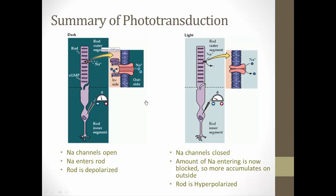In the dark, cyclic GMP keeps sodium channels open, so sodium flows in and the rod is depolarized. In the light, cyclic GMP is broken down, sodium channels close, sodium accumulates outside making the inside very negative, and the rod becomes hyperpolarized. The key point: in the dark the rod is depolarized; in the light the rod is hyperpolarized.